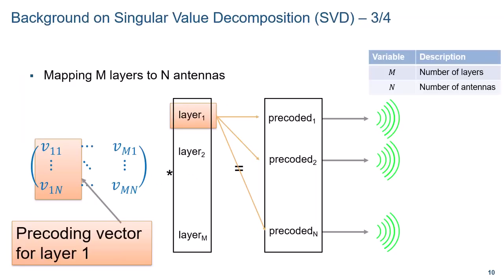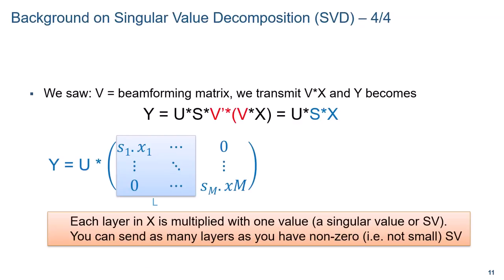So what does transmitting VX mean? If we look at the first column of V, that column is a precoding vector — it takes the first value of X, which is the first layer, and maps it to N antennas with a given amplitude and phase relationship. The same applies to all other columns of V, which represent additional precoding vectors for the other layers. Using V as a beamformer results in each layer being multiplied by a singular value at the receiver. In practice, the base station chooses to only transmit as many layers as there are singular values with decent energy, using only the first L columns of V. So the V matrix from SVD decomposition is a great estimate for the beamforming matrix.